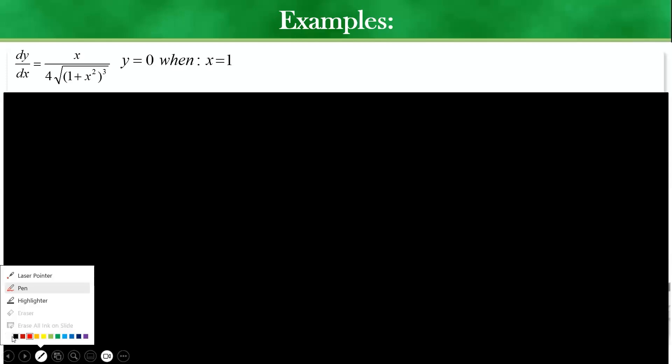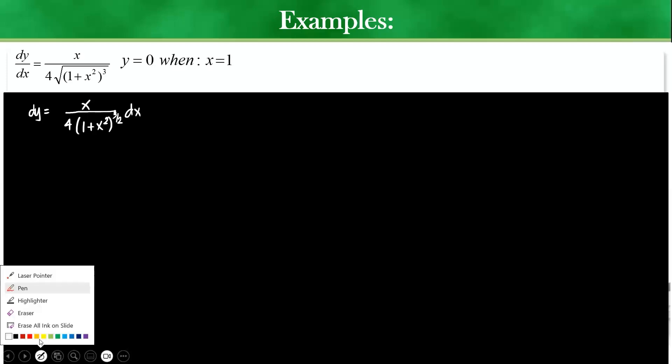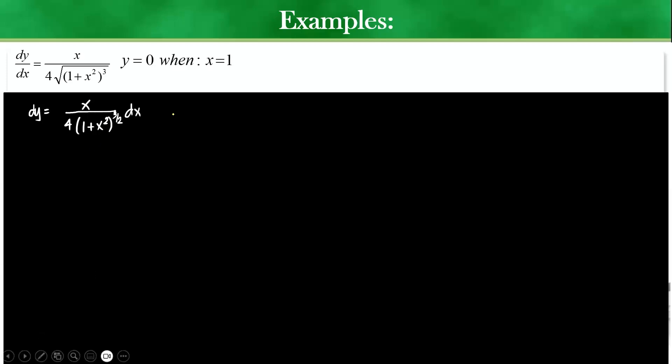So, first things first. Can we rewrite this as a variable separable? Yes, because this one can be rewritten as dy is equal to x over 4, exponent 1 plus x squared. This one could be 3 halves. And then this is dx. Now, which one's more difficult? The one at the denominator. So, I can say that u be equal to 1 plus x squared.